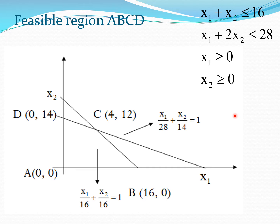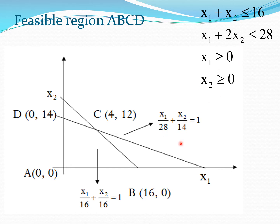To solve the problem graphically, we first extract the feasible region from the four inequalities by plotting the constraint functions. Writing each expression so the right-hand side equals one helps identify the boundary lines. The first constraint gives X1/16 plus X2/16 equals 1, and the second gives X1/28 plus X2/14 equals 1.